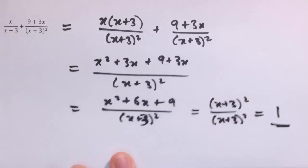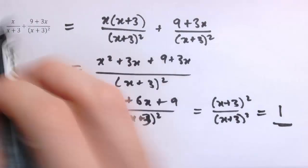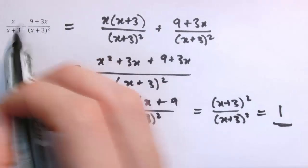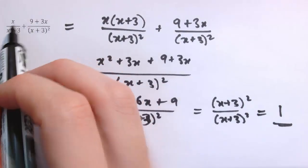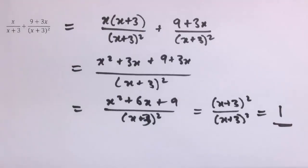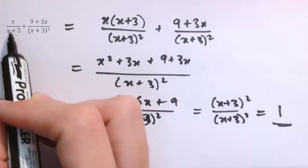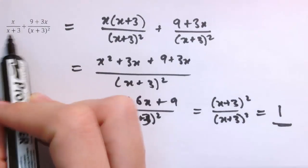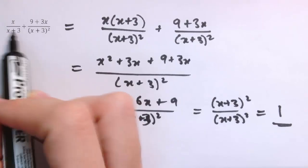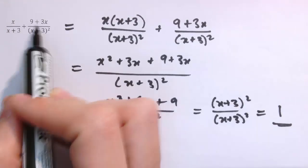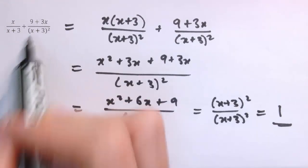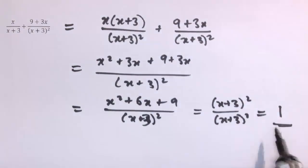You can check any value of x in this complicated expression and you will always get 1. The only exception is x equals minus 3, because that would give division by zero. For any other value, the result is 1.